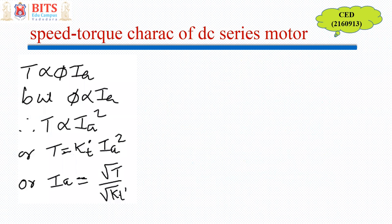Now to derive its characteristics, we know that torque is proportional to flux into armature current and flux is proportional to current. So torque is, in fact, proportional to armature current square or should I say Ia is nothing but some constant times square root of T. So this is the relation which we will use to substitute in the speed equation.